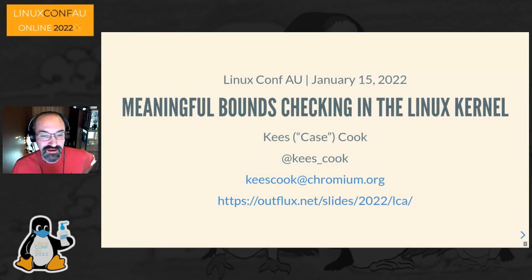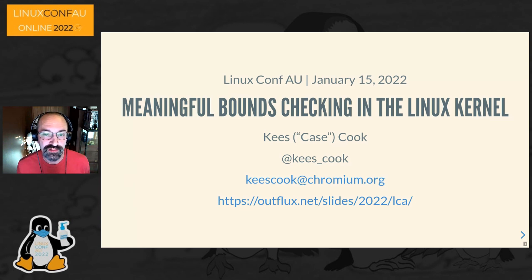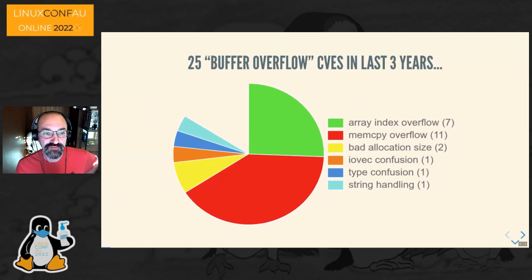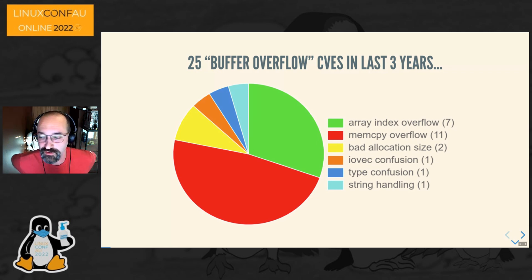Thanks for having me. I'm Case Cook, here to talk about some of the work we're doing in the Linux kernel for actually doing meaningful bounds checking. I got more and more irritated by some of the flaws that were cropping up in the kernel around buffer overflows, and I wanted to see if there was a way we could actually put a stop to this.